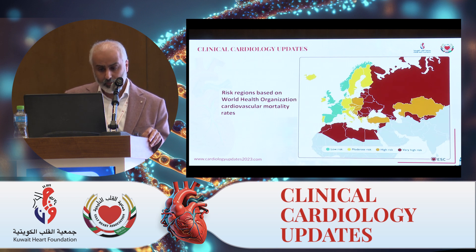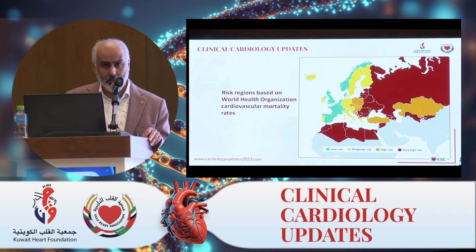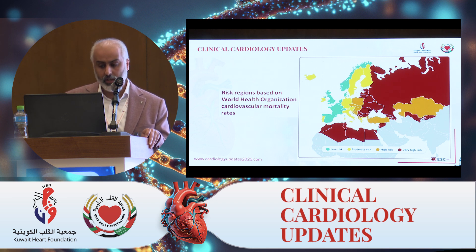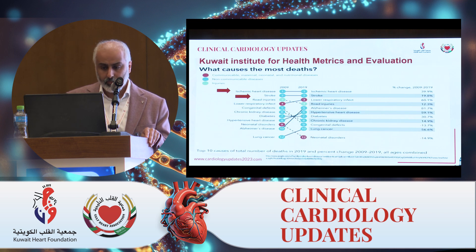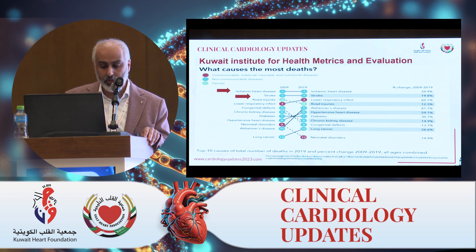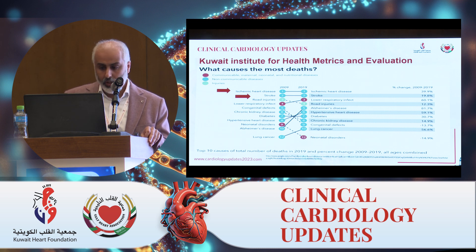Looking at the global picture, the World Health Organization has divided the member countries of the ESC into countries with low risk, moderate risk, high risk, or very high risk populations for cardiovascular mortality. Our country is not in the chart, but we are all surrounded by red — very high risk — countries. Our data is lacking in recent years. I only could find slightly older data from the Kuwait Institute for Health Metrics and Evaluation. Looking at the ten major causes of total deaths in 2019, ischemic heart disease was number one, and ten years later continued to be number one with an increase of almost 40%. Stroke, another atherosclerotic cardiovascular manifestation, is the second cause.